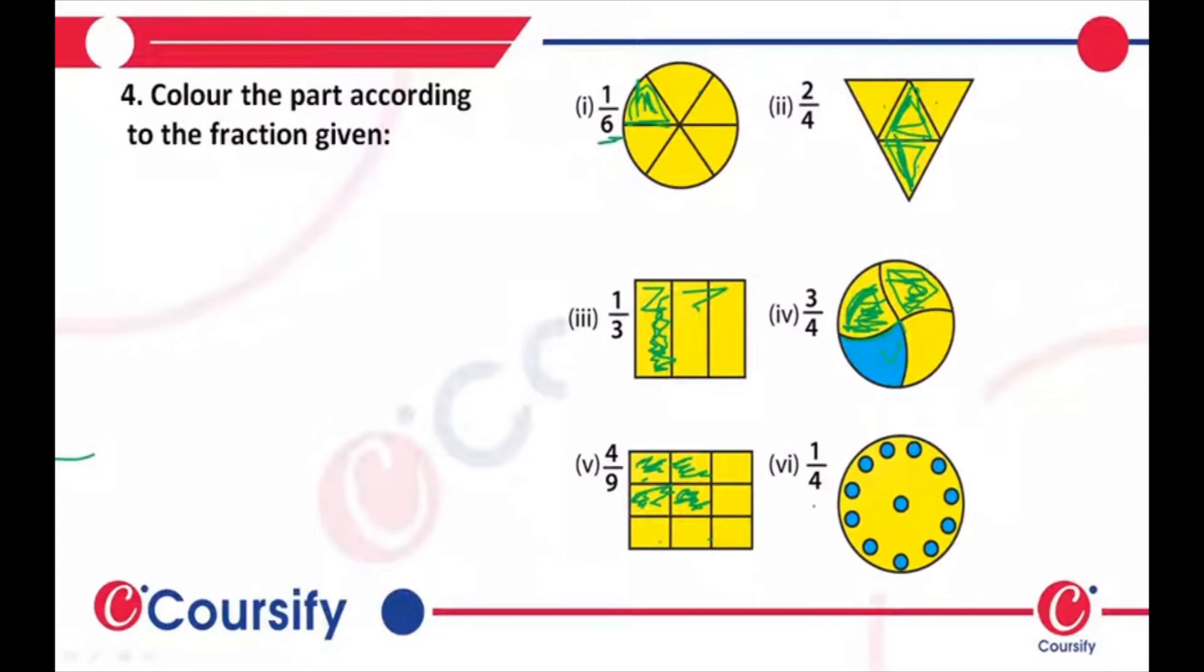But as you can see in this question, there are 1, 2, 3, 4, 5, 6, 7, 8, 9, 10, 11, 12 places, but it says 1/4. So how do we change this 1/4 in terms of 12? Let's check. So 1/4 is equal to...